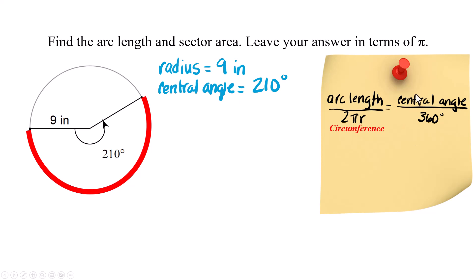Part over whole, part over whole. That's the big idea that we're going to use in both problems today. So let's set up what we have. I have the arc over 2π times 9 because 9 is the radius equals 210 over 360.